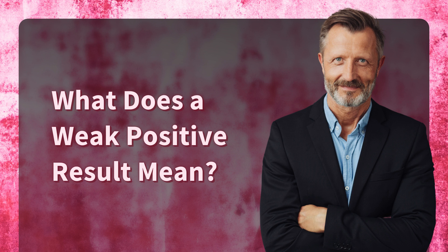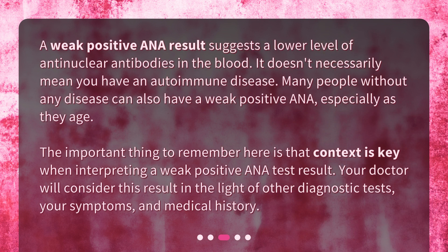What does a weak positive result mean? A weak positive ANA result suggests a lower level of anti-nuclear antibodies in the blood. It doesn't necessarily mean you have an autoimmune disease. Many people without any disease can also have a weak positive ANA, especially as they age. Context is key when interpreting a weak positive ANA test result — your doctor will consider this result in light of other diagnostic tests, your symptoms, and medical history.